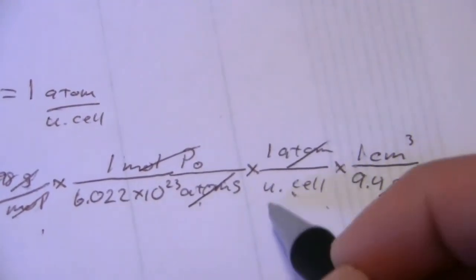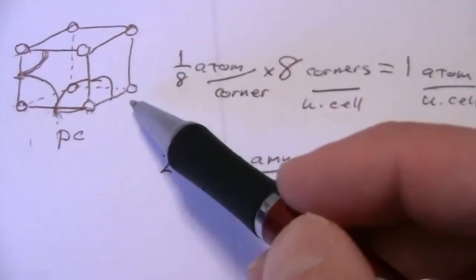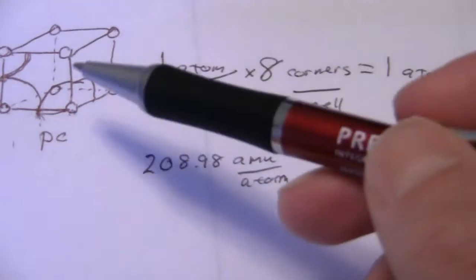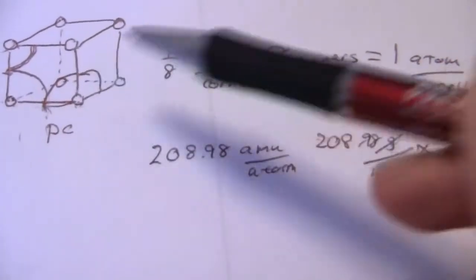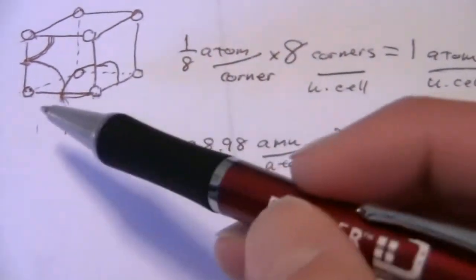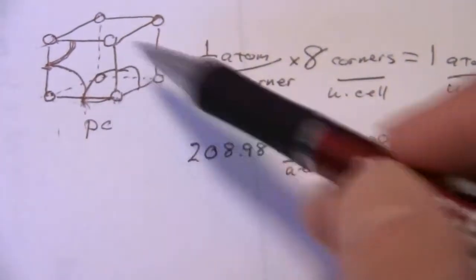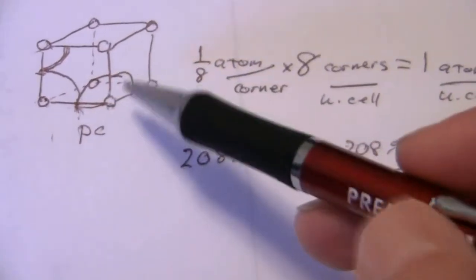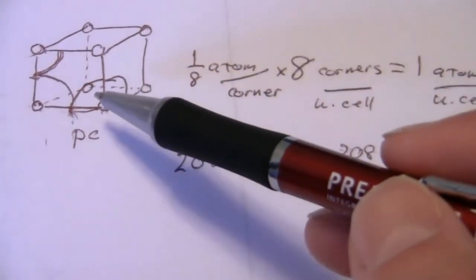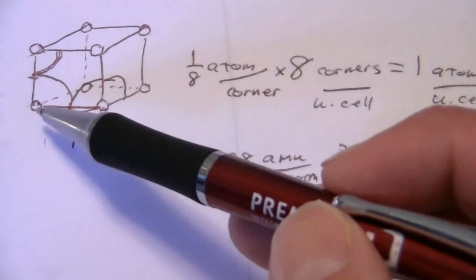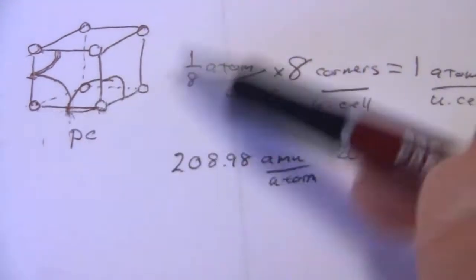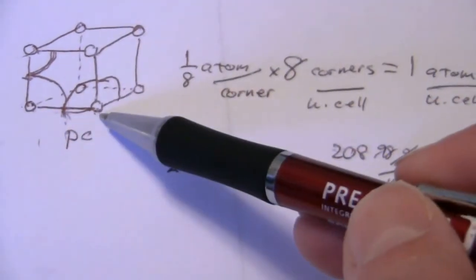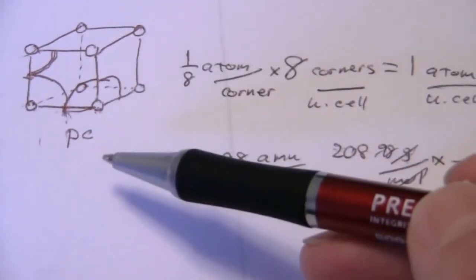Now I'm ready to find the dimensions of this unit cell. Cubic centimeters is volume, so that would be the volume of this unit cell. Of course, this is a very tiny number because we're talking about a single atom within the cell, so it's a very small cell. But what I want to find is just one side. I want to find length. So how do I get from volume to length? I take the cube root.